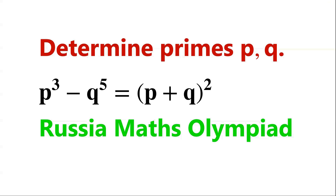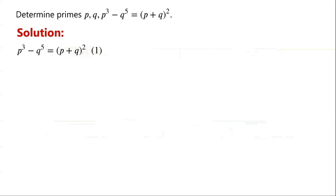Determine all possible primes p and q such that p cubed minus q to the power of 5 equals p plus q all squared. Because p and q are prime numbers, so p and q are greater than or equal to 2.